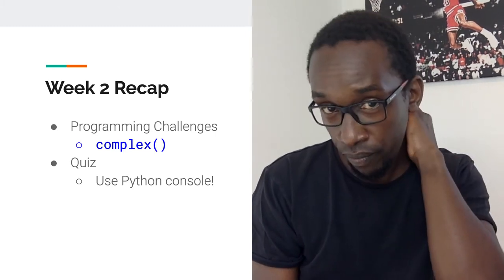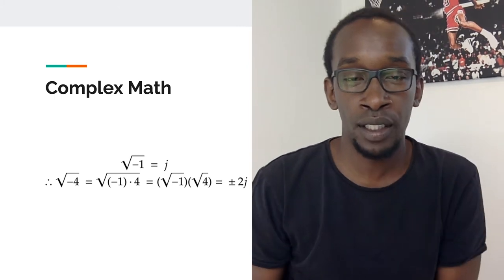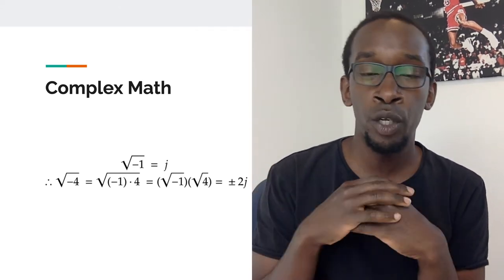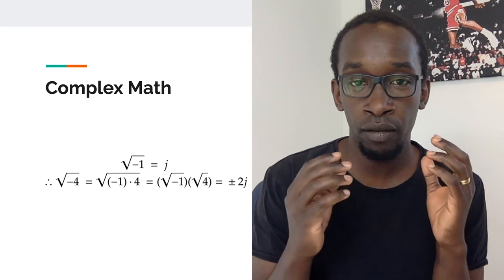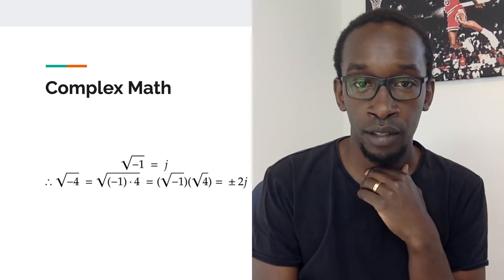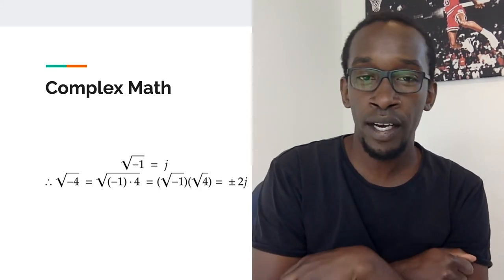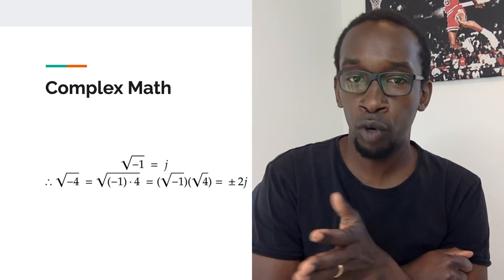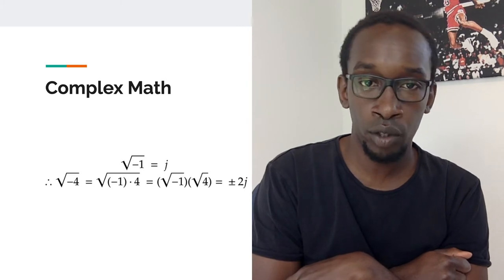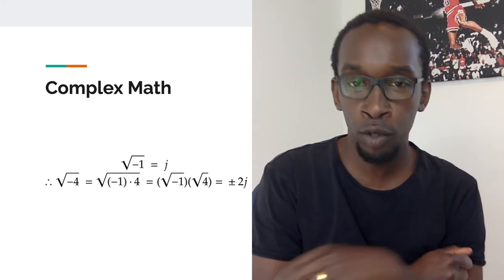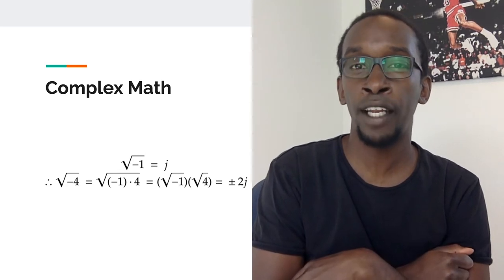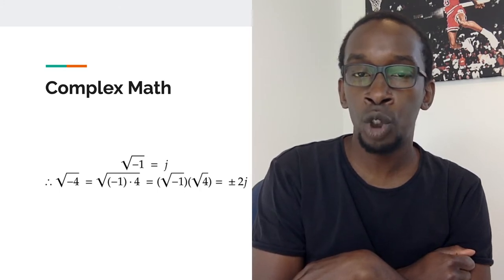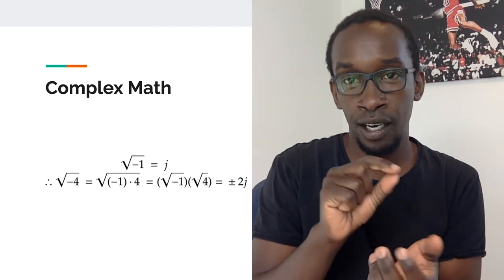Let's look at complex numbers. The core idea is shown here on this slide. Typically when you have a negative number inside a radical sign — that's the square root sign — you know you're going to end up with a complex solution. The base of all complex solutions is the square root of minus one, which is j. From a mathematical point of view you'd use i, but in engineering they use j to distinguish it from alternating current i.